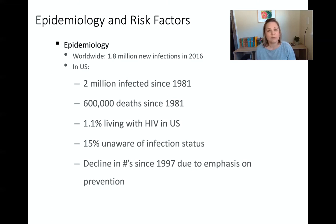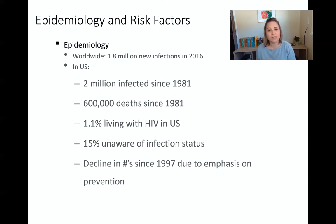Different comorbidities make HIV and AIDS worse and shorten a person's lifespan. Those comorbidities include things like tuberculosis, malaria, and malnutrition. If you think about some of the countries in Africa that struggle with food sources and also have issues with tuberculosis and malaria, you can understand why the HIV and AIDS epidemic is even worse there.